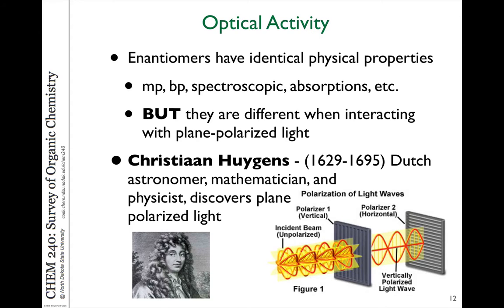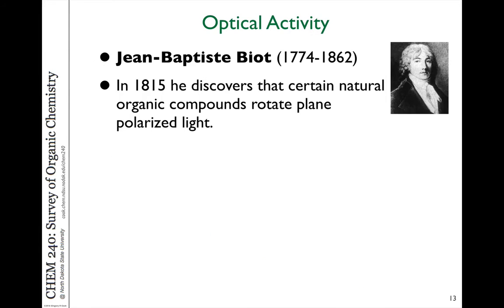It was in the 17th century when the Dutch astronomer Christian Huygens discovered plane polarized light. If you take light, which is traveling in waves in all 360 degrees, and pass it through a polarizing filter, you get light polarized in one direction only. It was in 1859 when another scientist discovered that certain natural compounds rotated plane polarized light.